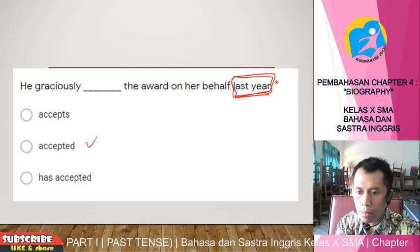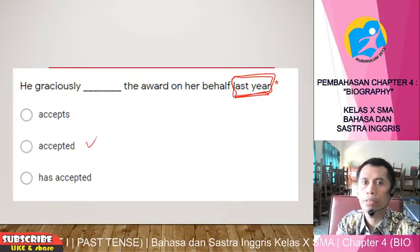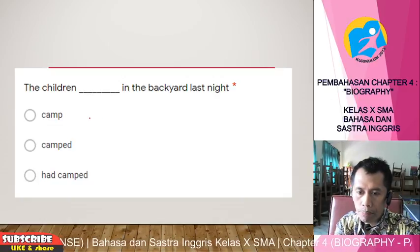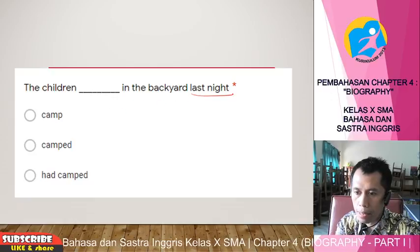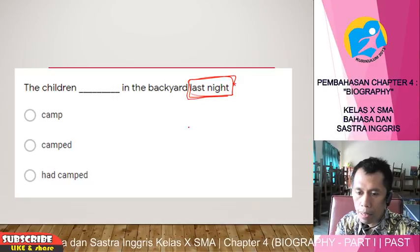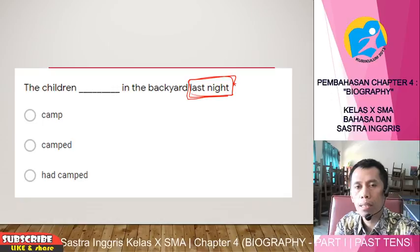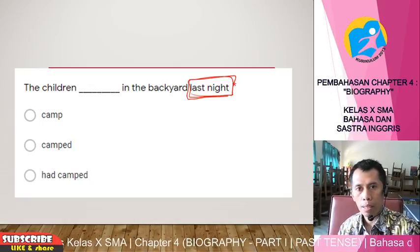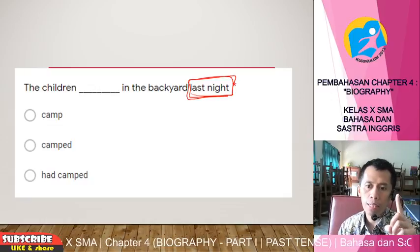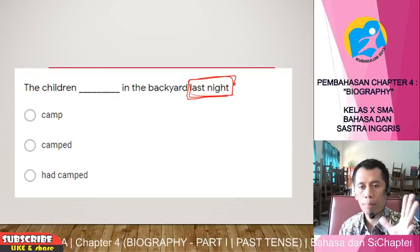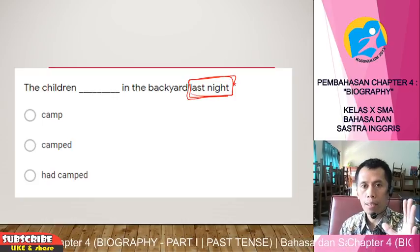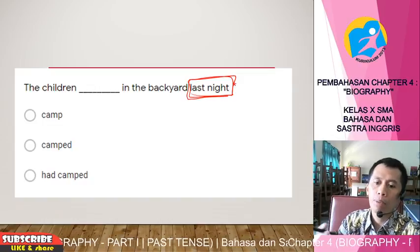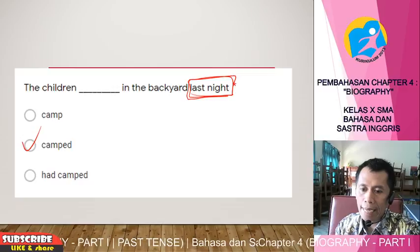'The children came in the backyard last night.' 'Last night' is the time marker indicating this happened in the past. Always pay attention to when it happened. The difference between Indonesian and English is that in Indonesian, we have only one verb form — 'kemah' or 'berkemah' — regardless of tense. In English, when it already happened in the past, use verb 2. This applies to all verbs. So: 'The children camped in the backyard last night.'